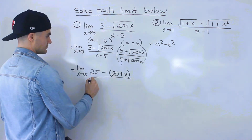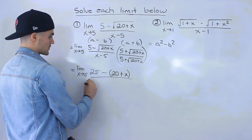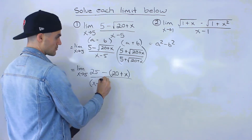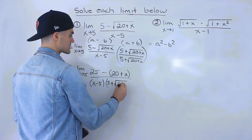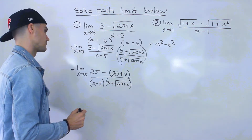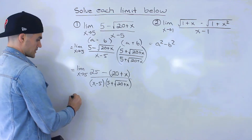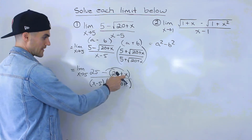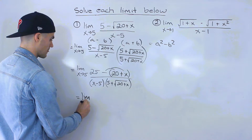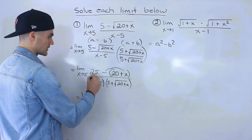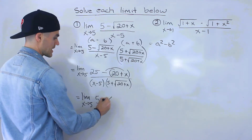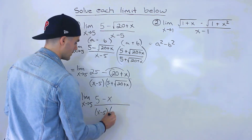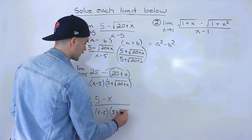Down here, notice that this isn't a difference of squares, so we keep those two terms separate. I'll write (x minus 5) in brackets, and then (5 plus root of 20 plus x) in brackets as well. Now we can simplify the numerator. Distributing the negative inside the bracket gives us minus 20 and then minus x. So we'll end up with 25 minus 20, which is 5, and then minus x in the numerator. Then we have (x minus 5) times (5 plus root of 20 plus x) in the denominator.